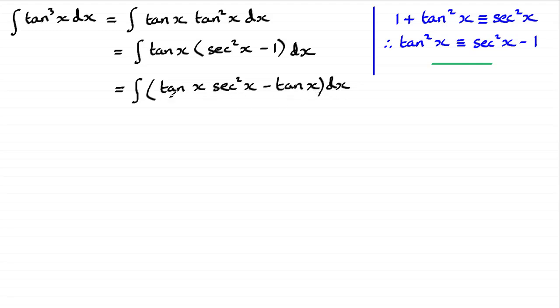When it comes to this first term, tan x times sec squared x, this is one that you might be able to do by recognition, but I'm going to show you how you can do it by substitution. If we take that integral first, tan x times sec squared x, then we make the substitution u equals tan x.